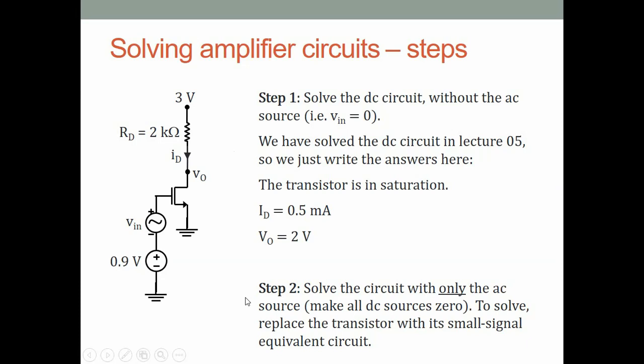Step two must follow step one because the small signal circuit uses g_m and r_o, which are functions of the DC currents and voltages. So we must solve the DC circuit first to find those operating point values, and then use them in step two to solve the small signal circuit.